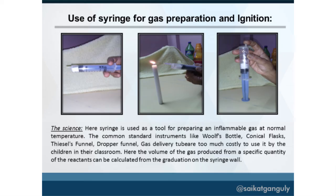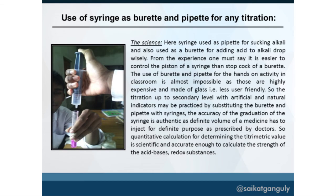A syringe can also serve as an apparatus for preparing gas. It is very useful, and if the gas is combustible, you can even ignite it through the needle of the syringe. Furthermore, a syringe can be used as a burette and pipette to calculate quantitative data and perform exact titration measurements.